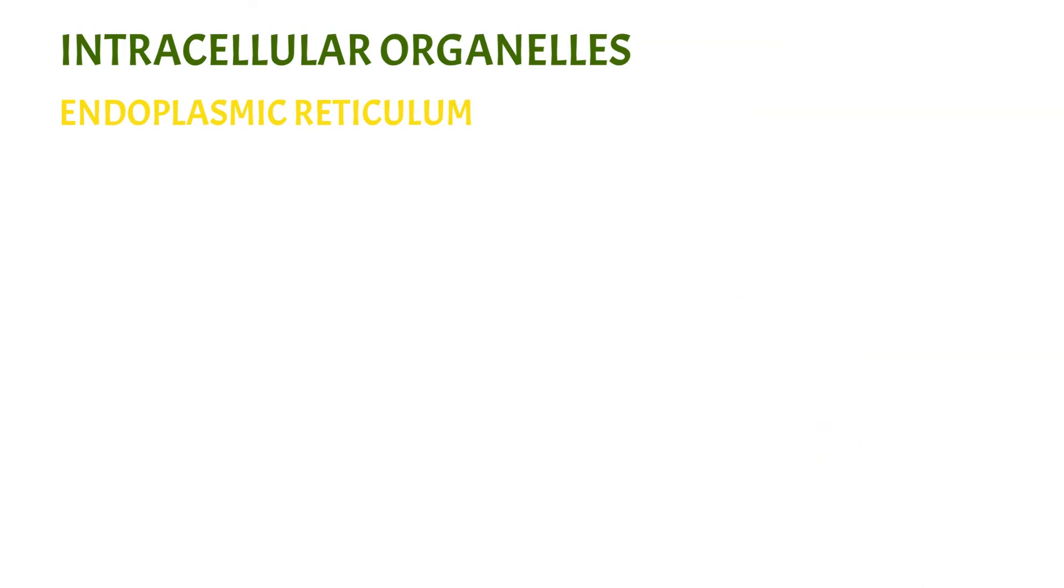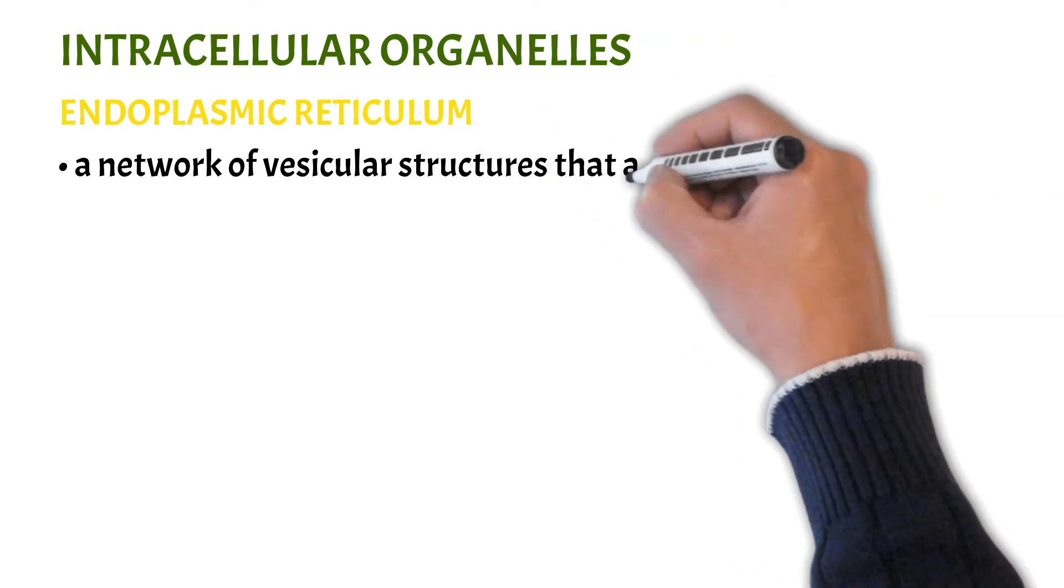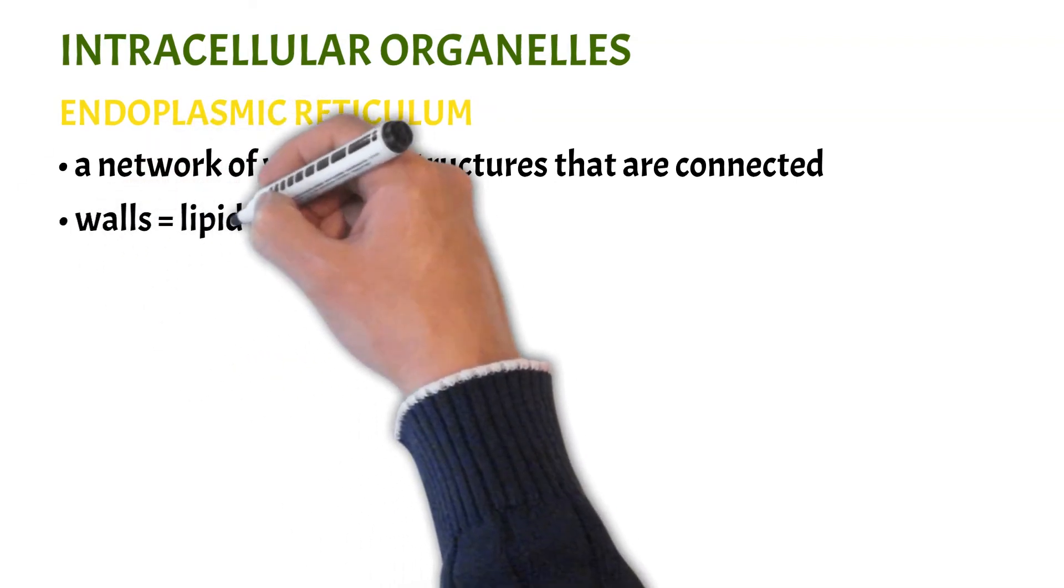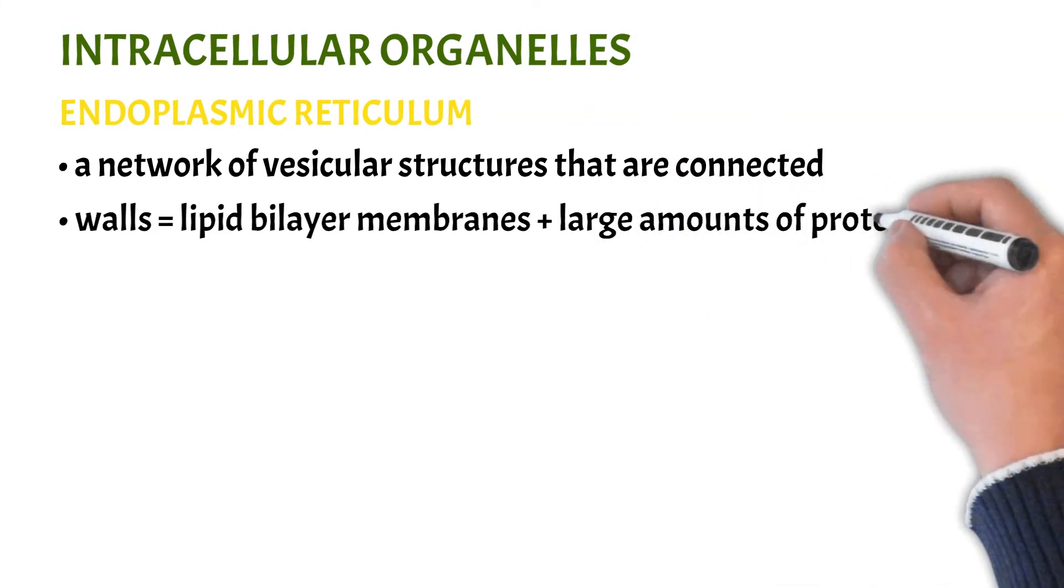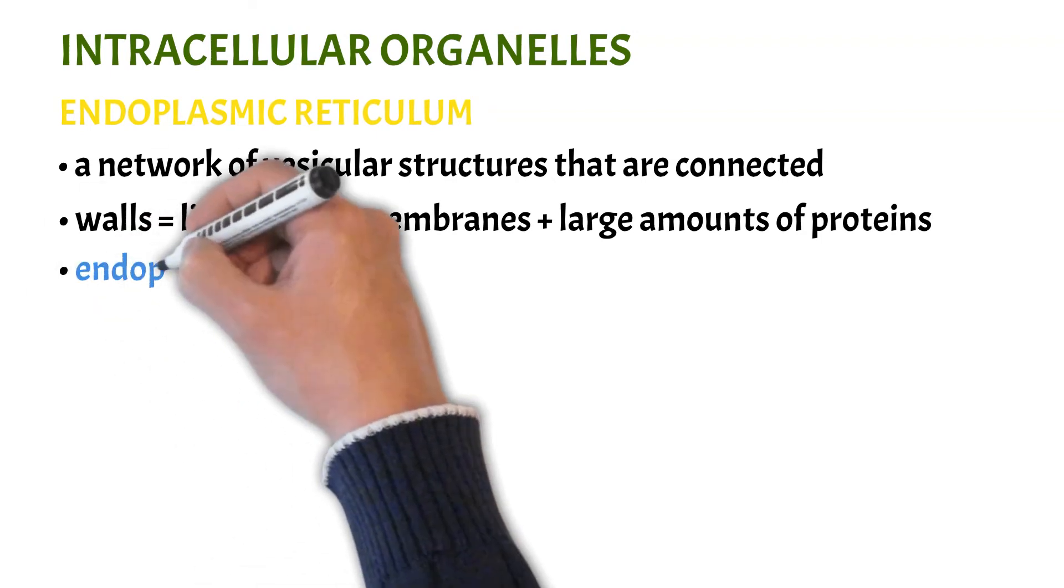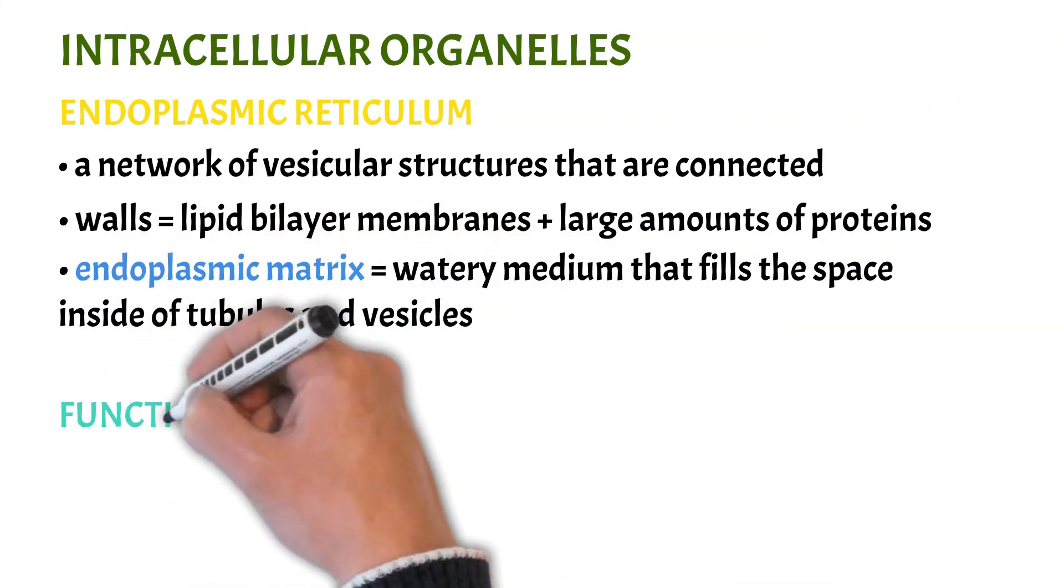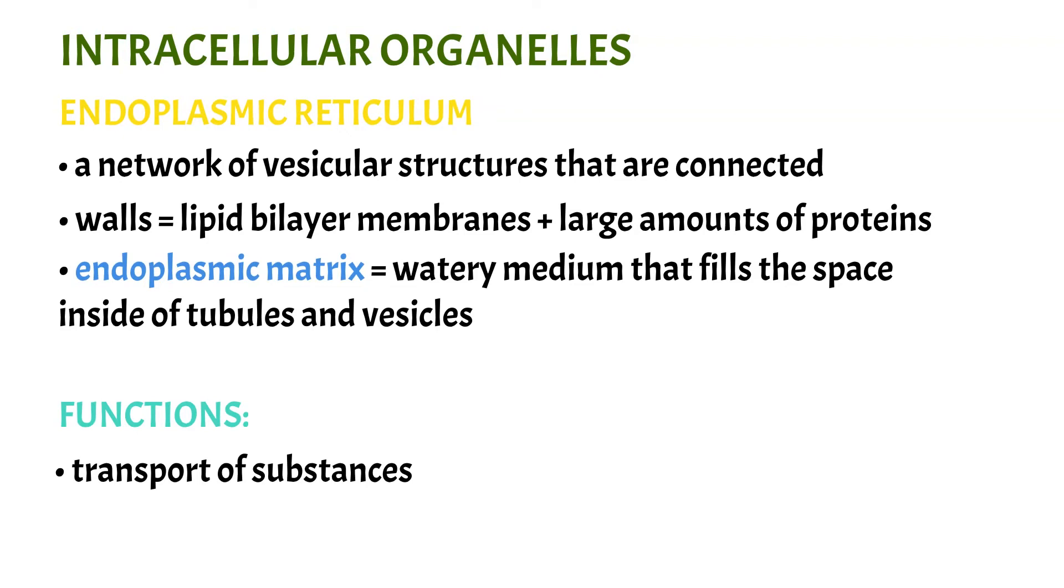The endoplasmic reticulum is simply a network of tubular and flat vesicular structures in the cytoplasm that are connected to one another. Their walls are constructed of lipid bilayer membranes that contain large amounts of proteins that are similar to the cell membrane. The space inside the tubules and vesicles is filled with endoplasmic matrix, a watery medium. The endoplasmic reticulum's function is to transport substances. Substances from different parts of the cell enter the space of endoplasmic reticulum and they are then sent to other parts of the cell.